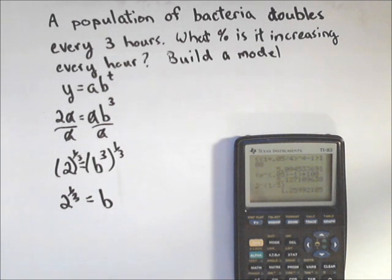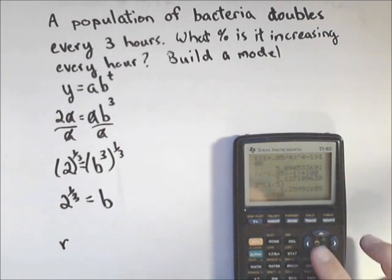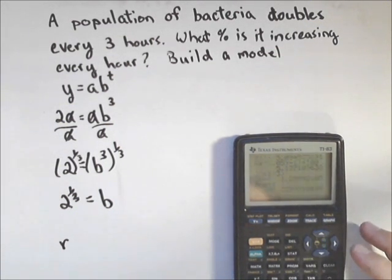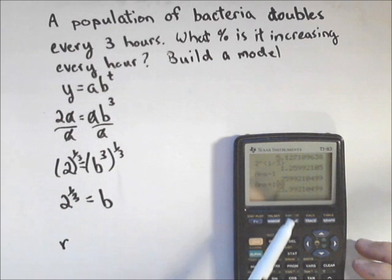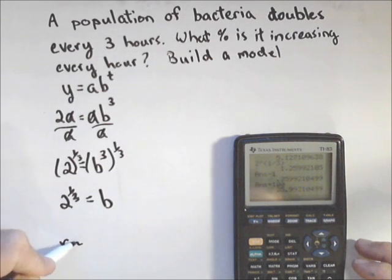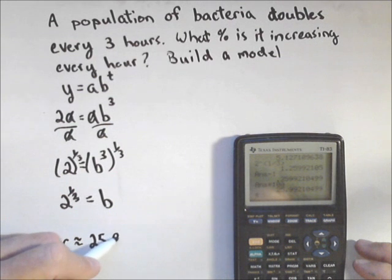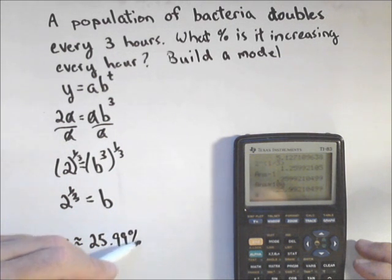Now what that is, is that's my growth factor. Now I need to find the growth rate. So r is going to be that number. I'm going to have to subtract off one to subtract off the 100%. And there is my rate as a decimal, so I'm going to multiply it by 100. And I get 25.99%, I'm going to round that off. So it's increasing by about 25.99% every hour.